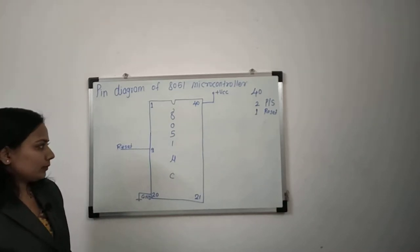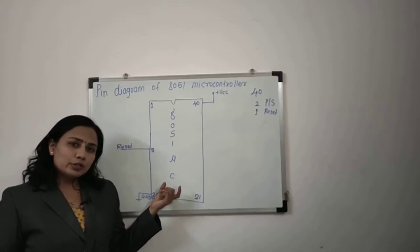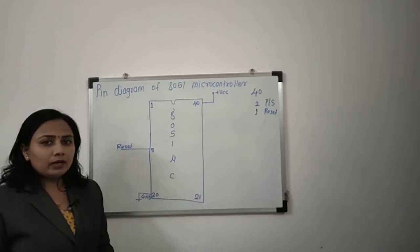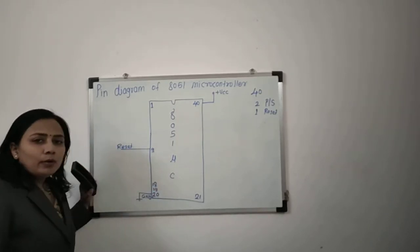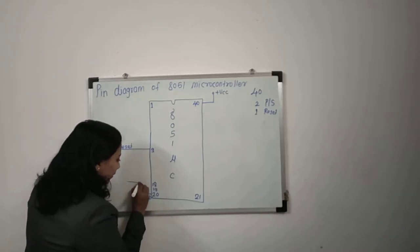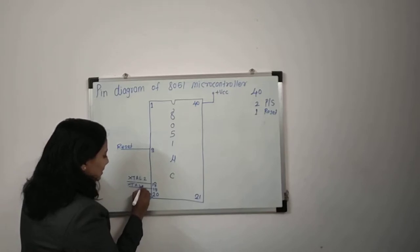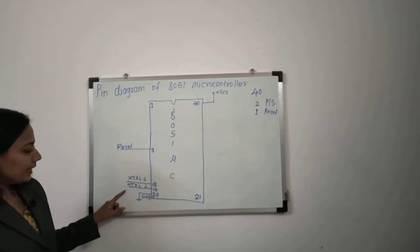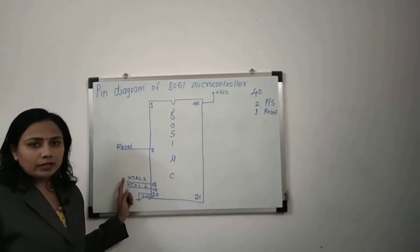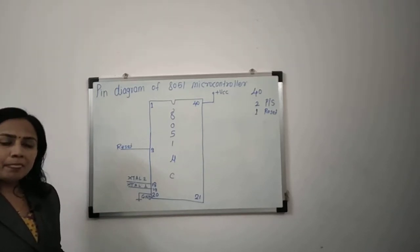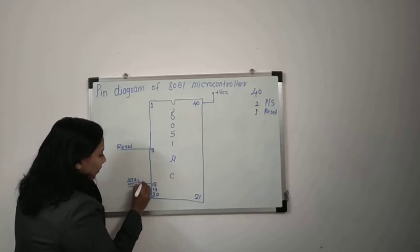As we know, the 8051 microcontroller has an on-chip oscillator. To execute, it needs a crystal connected between pin number 18 and 19 of the microcontroller. Pin number 18 is treated as XTAL2 and pin number 19 is treated as XTAL1. These two pins are specially reserved for the connection of the crystal oscillator.